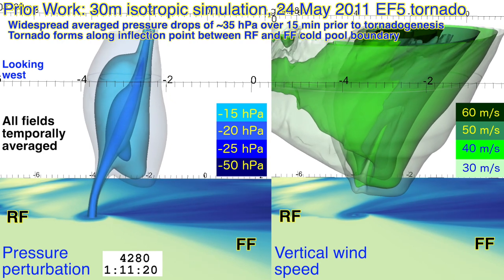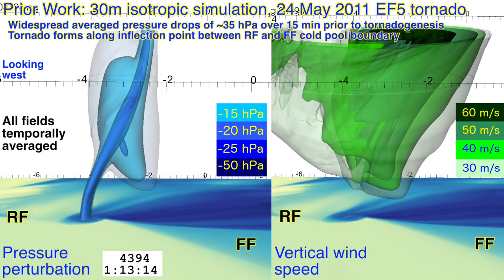The story we're converging on is that ingestion of streamwise vorticity via features such as the streamwise vorticity current results in a drop in pressure. The drop in pressure results in a strengthening of the updraft. The strengthening updraft near the ground enhances stretching, convergence, and all those things. And because there's an abundance of vertical and horizontal vorticity in that region, we get a tornado to form.